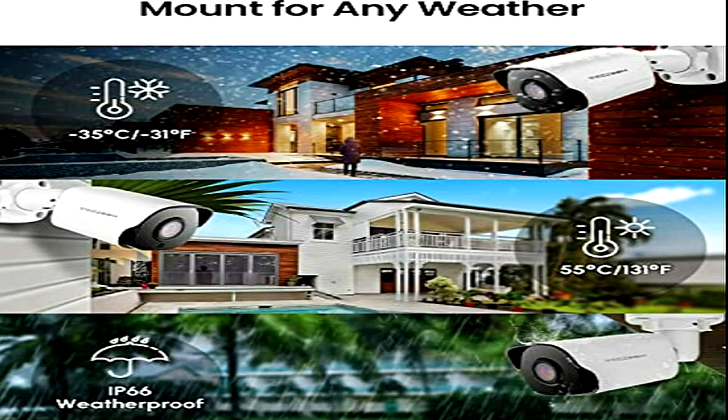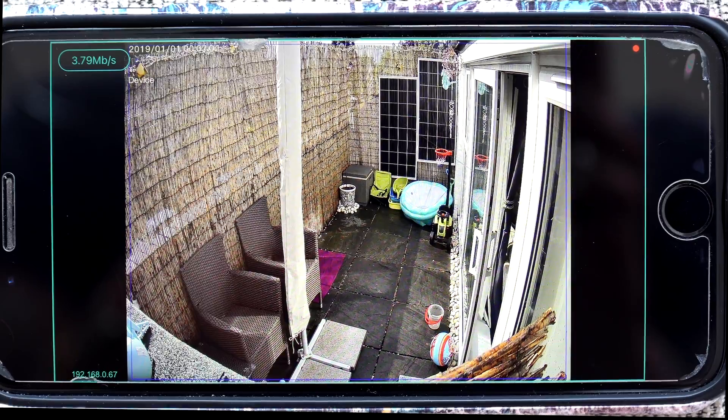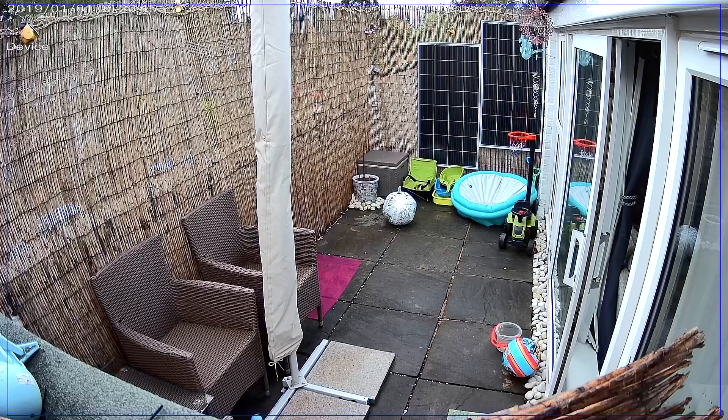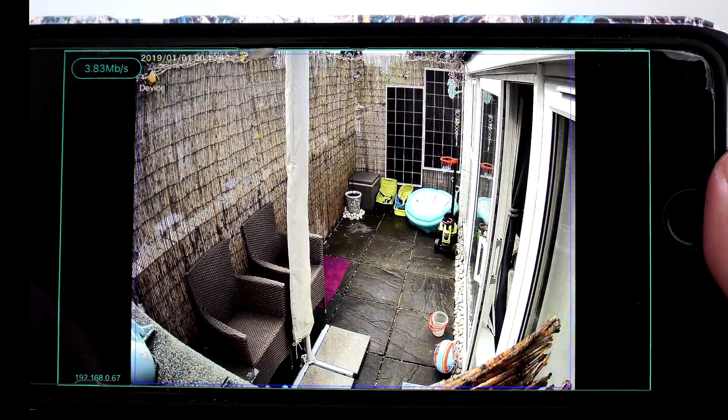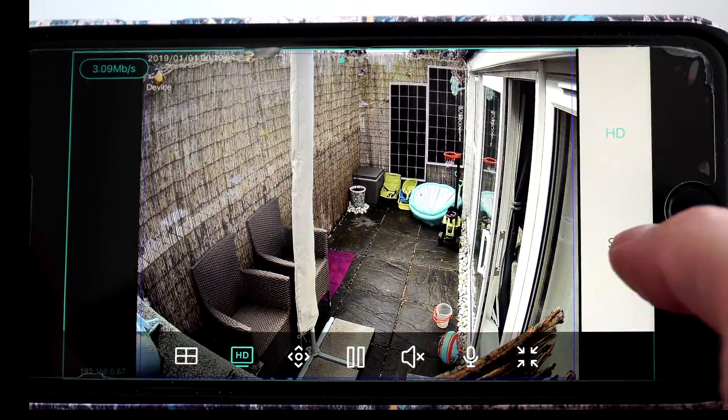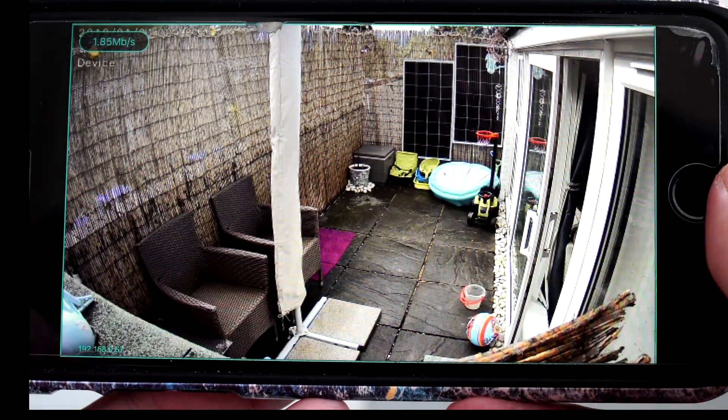As we said, these cameras can be used outdoors. They have an IP66 rating, which they're basically saying can be used in snow, rain or wind, of temperatures to minus 35 degrees and up to 55 degrees.